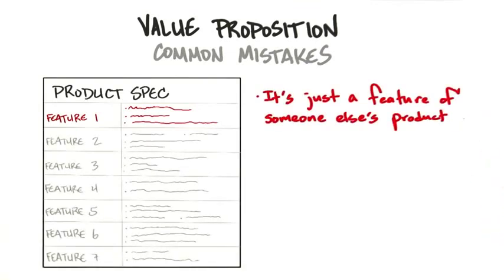You might have a good feature extension, but it might not be a business, or it might be a business for about nine months until the incumbent just adds that in their next release.